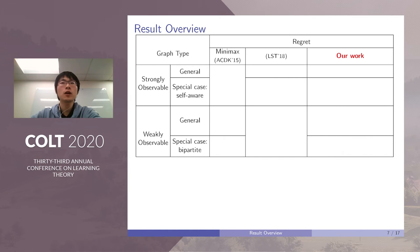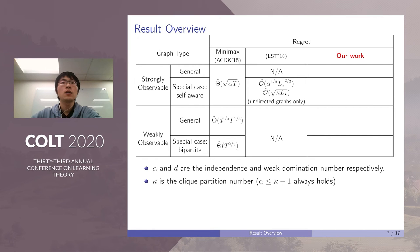Here we give a result overview. The minimax regret bound is given by Alon et al, where α and d are the independence and weak domination number of the graph. Lykouris et al first provided a small-loss regret bound, but only for self-aware undirected graphs. The regret bound is α^(1/3)L*^(2/3), or √(κL*). Here κ is the clique partition number of the graph.